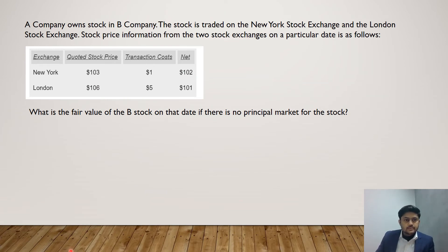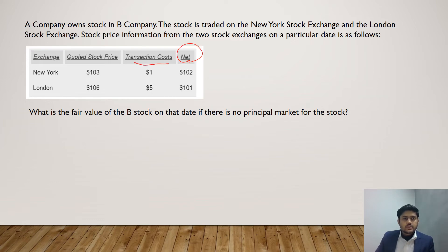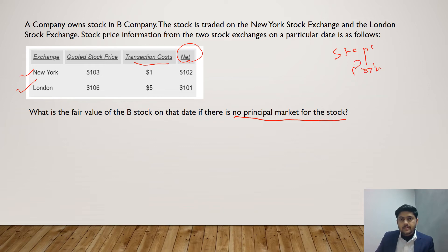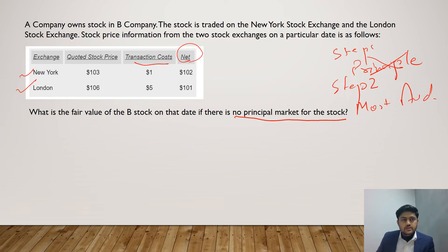Let's solve a question. Company A owns stock in Company B. The stock is traded on the New York Stock Exchange and London Stock Exchange. Stock price information from both exchanges on a particular date is given, showing quoted stock price, transaction cost, and net value. The question asks: what is the fair value of the stock on that date if there is no principal market? According to Step 1, we check for the principal market — there is none, so we move to Step 2: find the most advantageous market.